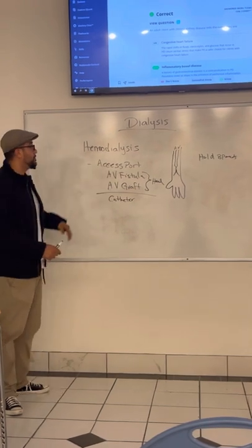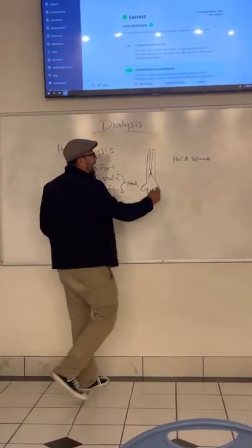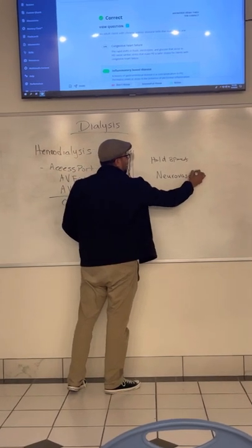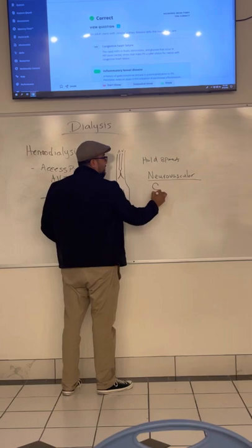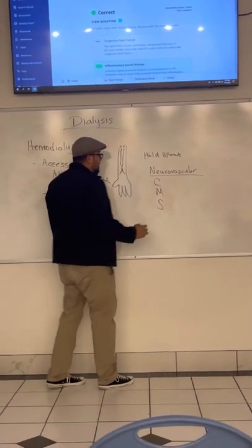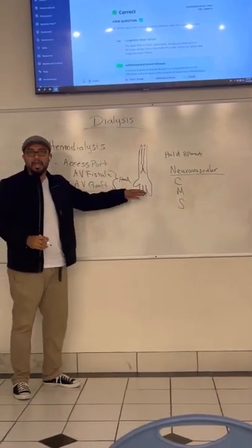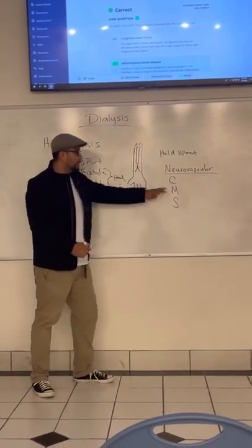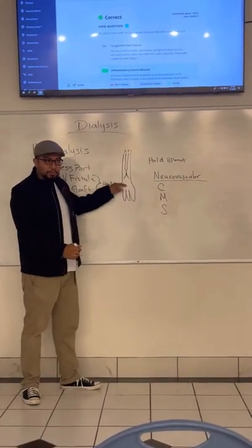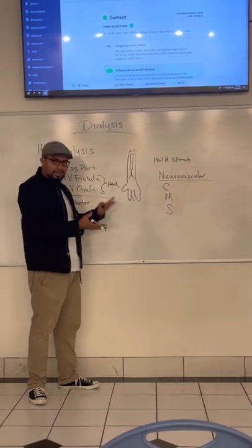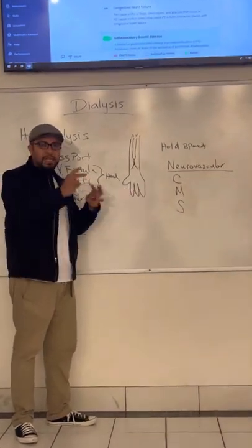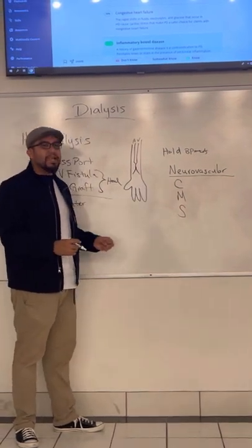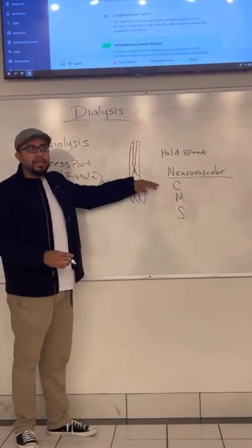You have to do a neurovascular assessment, which means you have to assess the circulation, the motion, the sensation of the distal extremity where the access port is at. And you check the capillary refill of the circulation, you check the temperature, the pulse. You compare with both arms, by the way, just to get a baseline. Your motion means that you ask the patient, can you move your fingers? And their sensation - can you feel this? That's how you know the neurovascular status is intact.